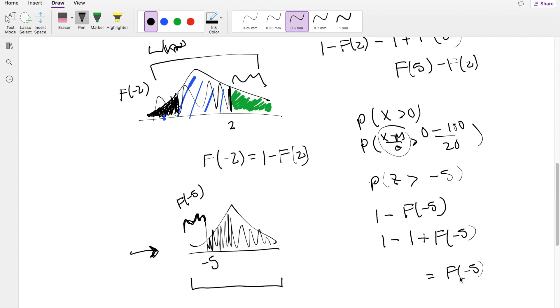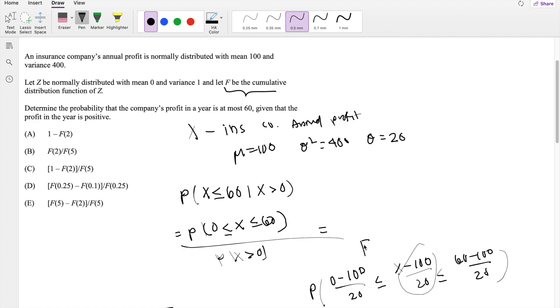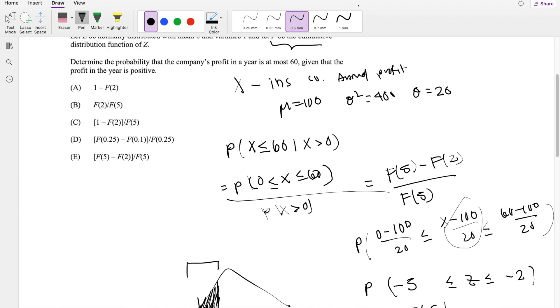Okay, so we're ready to put these two suckers together. The denominator we said was F of 5. And the numerator we said was F of 5 minus F of 2. So this is exactly your answer E.